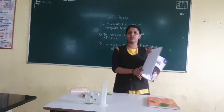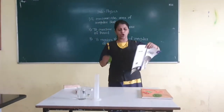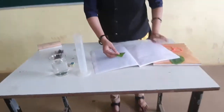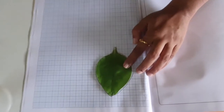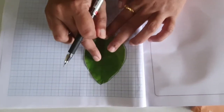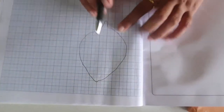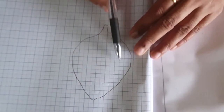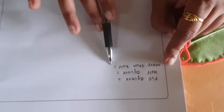So my dear students, see this is the graph paper. You have to draw just the outline of this leaf, which is irregular in shape. After drawing the outline, you have to measure the full squares first, then the half squares and more than half squares.